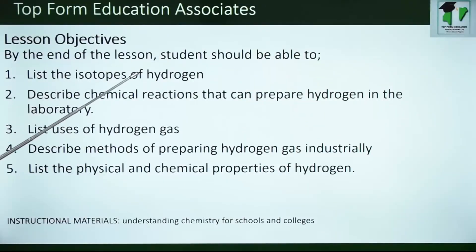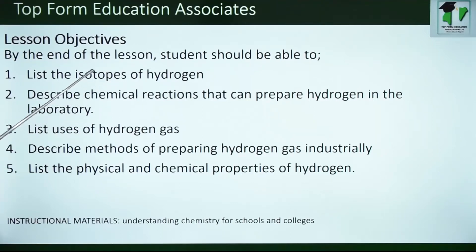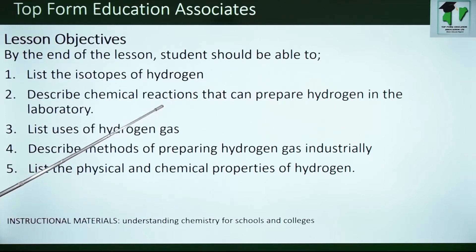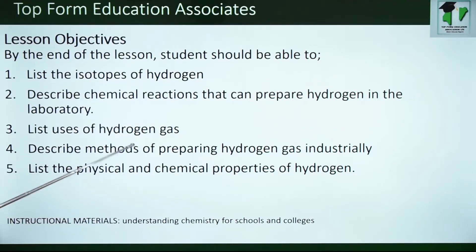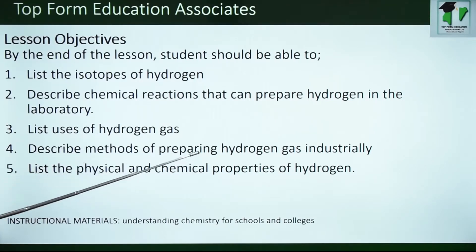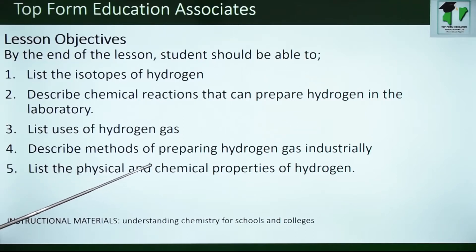By the end of the lesson, students should be able to list the isotopes of hydrogen, describe chemical reactions that can prepare hydrogen in the laboratory, list uses of hydrogen gas, describe methods of preparing hydrogen gas industrially, and lastly list the physical and chemical properties of hydrogen.